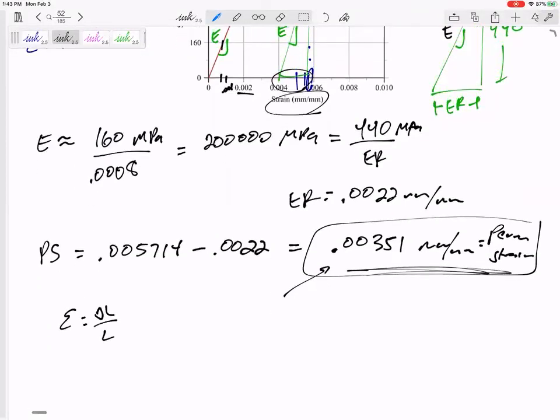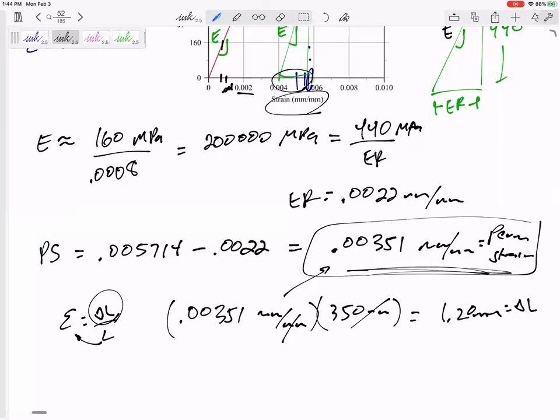So in order to get the delta L, you take strain and multiply it times L. So I take this .00351 millimeters per millimeter and multiply it times the length of 350 millimeters. And then we've got 1.2 millimeters. Let's say 1.20 millimeters. So that is the permanent deformation.